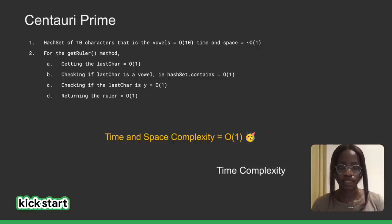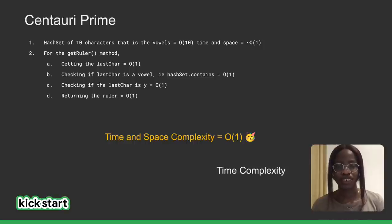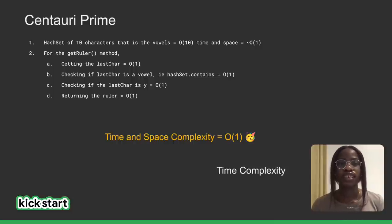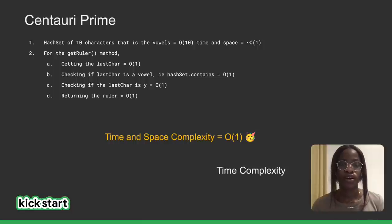Let's look at it. Initializing the set takes a total of O(10) time and space because we're adding the 10 vowels. This is like constant time. For the get ruler method, getting the last character of a string in Java is constant time, and the contains method of the hash set is also constant time. Thus, the whole method takes constant time. Congrats, we've arrived at a pretty optimal solution.